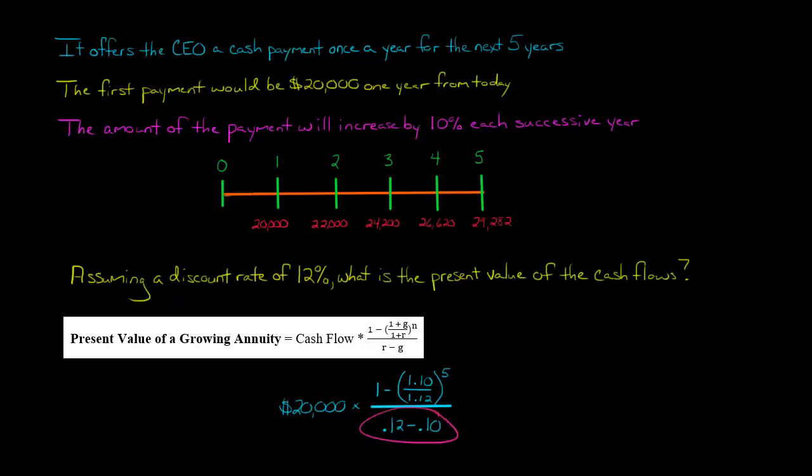And then in the denominator, we've got 0.12 minus 0.10, our discount rate minus the growth rate. And then the number of periods is 5. That corresponds to the n. All I did here was just plug in these numbers, or plug in for those variables.